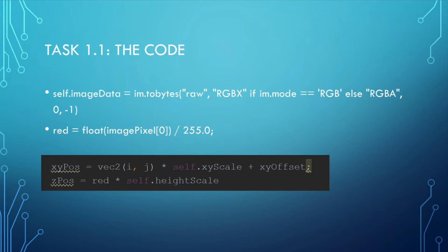Then, the z-pose, which denotes the height at every point in the terrain, could be set by z-pose equals red multiplied with self.heightScale, where red is the normalized red channel and heightScale is a member variable of the terrain class, which is predefined to scale the height of the terrain by 75.